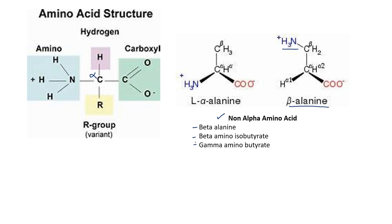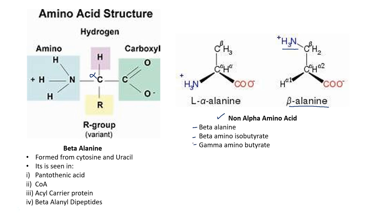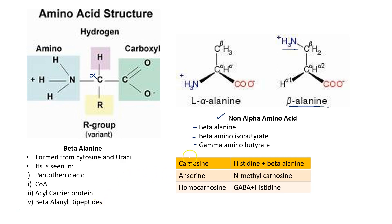Beta alanine is a very important amino acid which is formed from cytosine and uracil. It is seen in pantothenic acid, coenzyme A, acyl carrier protein, and beta-alanyl dipeptides. There are two beta-alanyl dipeptides formed by joining histidine and beta-alanine: the first being carnosine, and methylated carnosine which is called anserine.